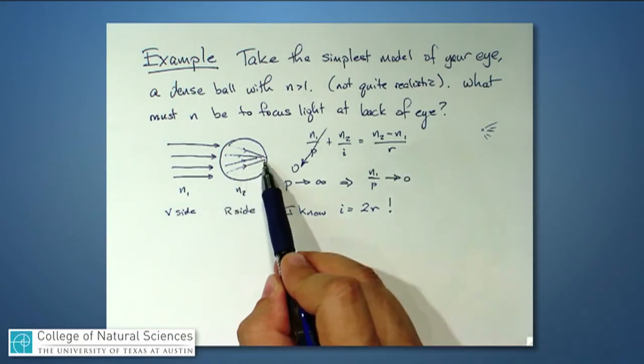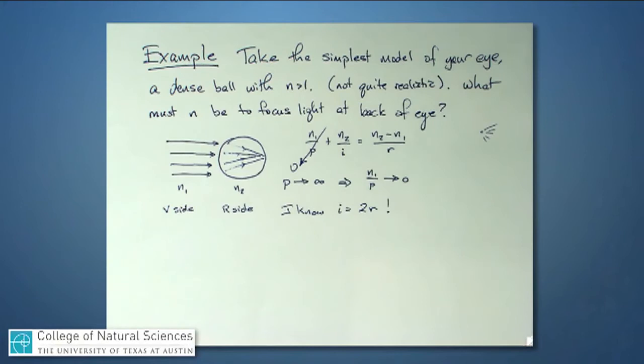The way I have drawn it, the image is over here on the R side, so I is a positive number. So actually my expression turns out to be right, and I didn't get any minus signs wrong.